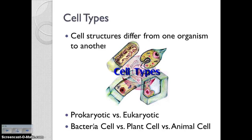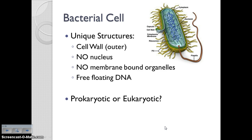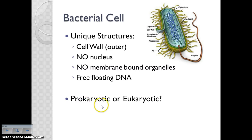There are cell structures that differ from one organism to another — prokaryotic cell structures versus eukaryotic cell structures, or the structures in a bacteria cell versus a plant cell versus an animal cell. The defining characteristics of a bacteria cell: the outer layer is a cell wall. Every cell has a cell membrane, but a bacteria cell has an outer cell wall that provides it with protection and support. They're prokaryotic, which means they have no nucleus and no membrane-bound organelles, and their DNA is free-floating. Bacteria cell: prokaryotic.